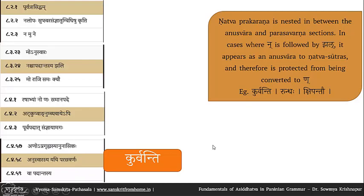This is one very nice example of how asiddhatva operating within the tripadi is very crucial to the system to ensure that correct forms are generated. With this we have seen the meaning of purvatrasidham and various examples. In the next few sessions we will see a few exceptions to purvatrasidham — cases where purvatrasidham will not operate.